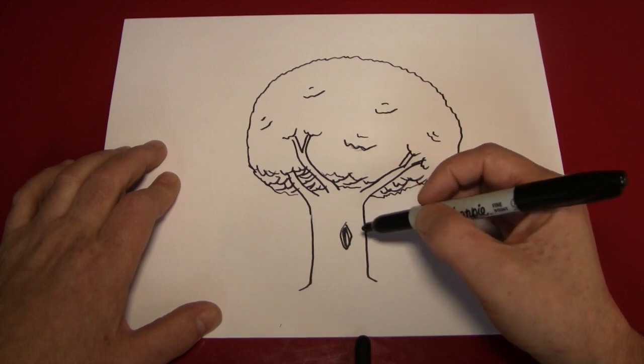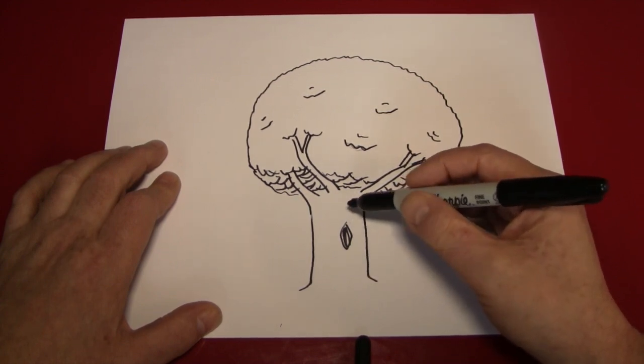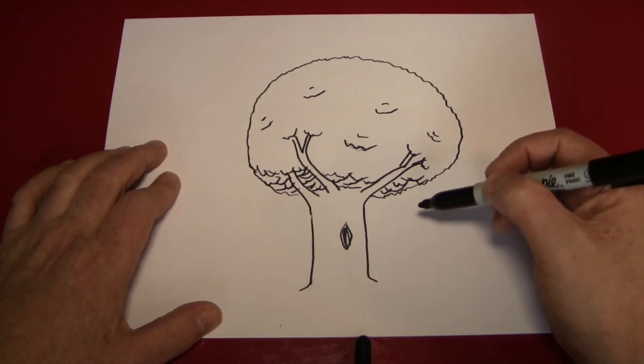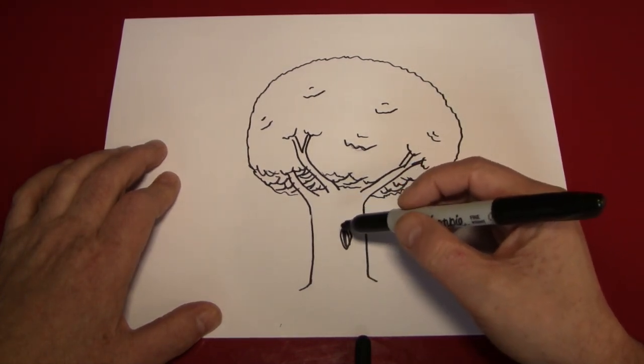And that gives you something for the bark lines, if that's what they're called, the striations in the side of the tree. Gives it something to kind of go around when you're making them.